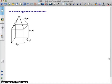In this video, we're looking at finding the approximate surface area of this composite solid. As we look at this composite solid, it's made up of a square pyramid and a square prism.